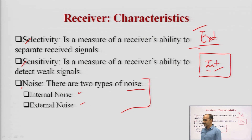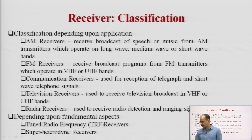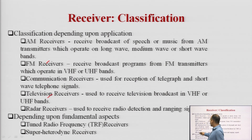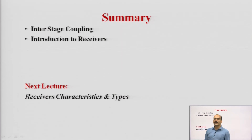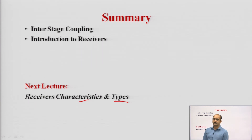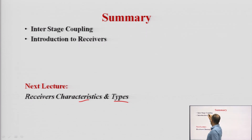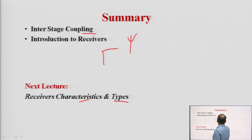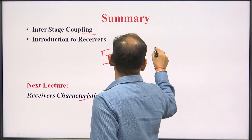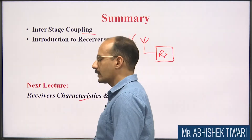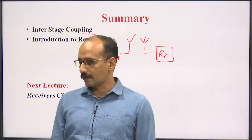Similarly, selectivity and sensitivity are also the receiver's main characteristics. In the next part, we are going to discuss receiver classification: AM receiver, FM receiver, television receiver, radar receiver — all depending upon various classification criteria. In the next lecture, we will discuss receiver types and characteristics in detail. We can complete this lecture today with the conclusion that impedance matching networks or interstage coupling networks are very much required for both the transmitting side and receiving side of the telemetry system.